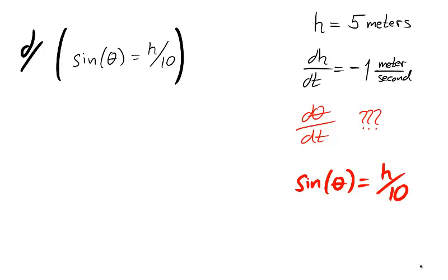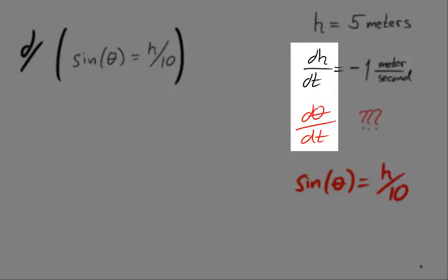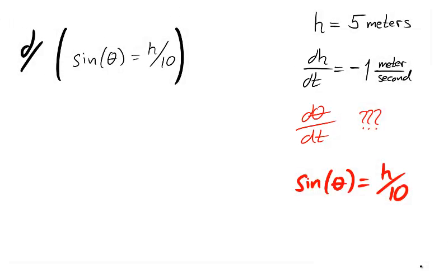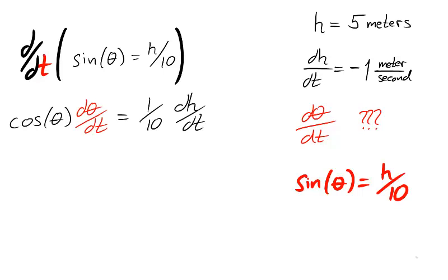We've answered our first three questions. Now we will use implicit differentiation on our equation to relate the rates. Consider for a moment which variable you are differentiating with respect to. As our rates are over dt, we will proceed with differentiating with respect to t. Keep in mind, when differentiating theta or h, you are left with d theta dt and dh dt. We now have an equation which relates our rates.